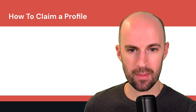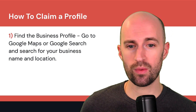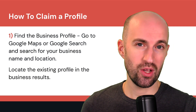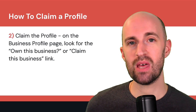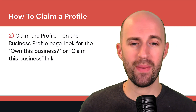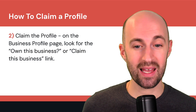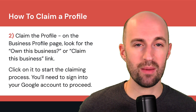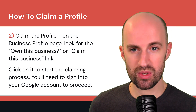If you want to claim a profile that already exists and was created by someone else, first find it by searching Google Maps or Google Search for your business name and location. Then on the business profile page, look for something like 'Own this business' or 'Claim this business,' click that link to start the claiming process, and sign into your Google account to proceed.